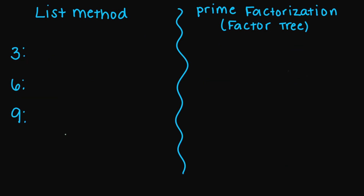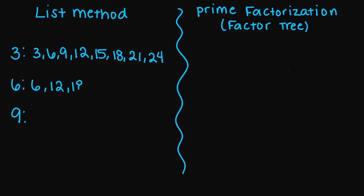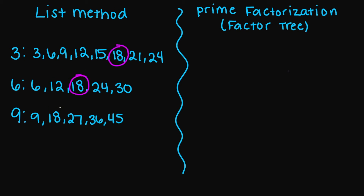So what if you had to find the least common multiple between three numbers? We're going to do the same thing, and this time we need to find the smallest common multiple between all three. Multiples of three: 3, 6, 9, 12, 15, 18, 21, 24. For my six: 6, 12, 18, 24, 30. For nine: 9, 18, 27, 36, 45. The smallest common multiple that all three numbers share is going to be the number 18. So your LCM for all three numbers is 18.